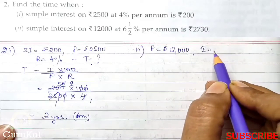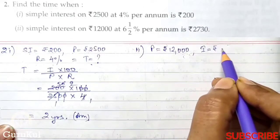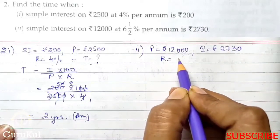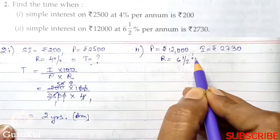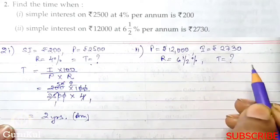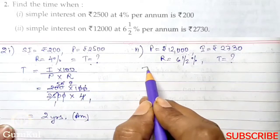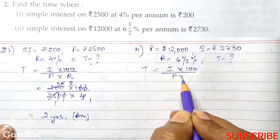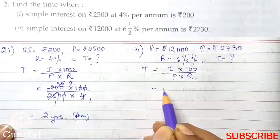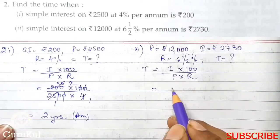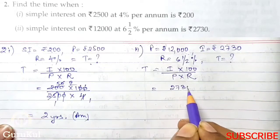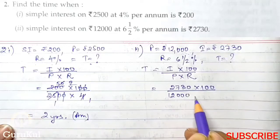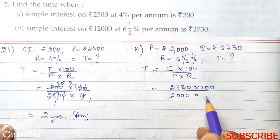Interest mentioned is Rs. 2730, rate is 6.5% and we have to find the time. So, we repeat the same formula. Interest into 100 by P into R. Now we'll substitute respective values in their places.